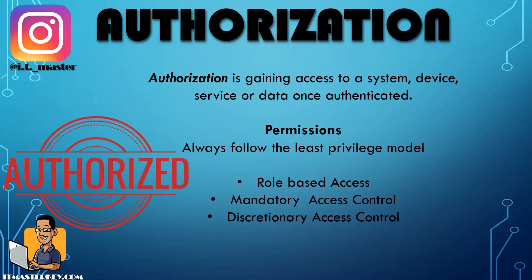For example, a janitor shouldn't have the same permissions as the head IT tech, because different people have different responsibilities. If you give too many permissions to the wrong person, they may accidentally — or intentionally — delete, move, or modify the wrong things. You want to always apply the principle of least privilege to minimize the attack surface. If someone works in human resources, they probably only need access to HR files; finance staff should only access finance data.